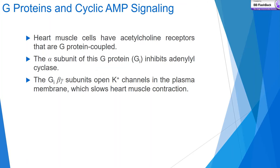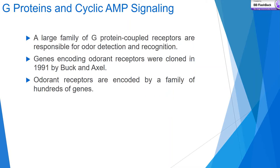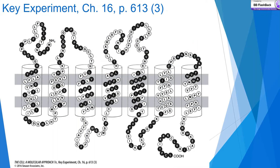G-proteins regulate a large array of targets. In addition to enzyme regulation, G-proteins can also regulate ion channels. For example, the neurotransmitter acetylcholine acting on heart muscle cells, which have acetylcholine receptors that are G-protein coupled: the alpha subunit inhibits adenylyl cyclase, while the beta-gamma subunit opens potassium channels in the plasma membrane, slowing heart muscle contraction. A large family of G-protein coupled receptors is responsible for odor detection; the genes encoding odorant receptors were cloned in 1991 by Buck and Axel.